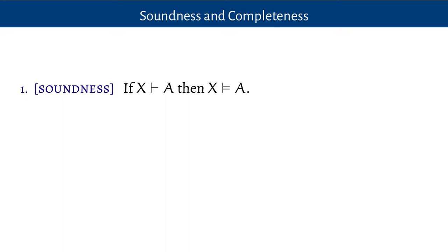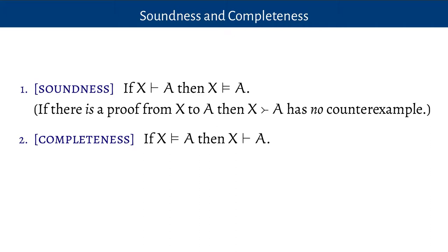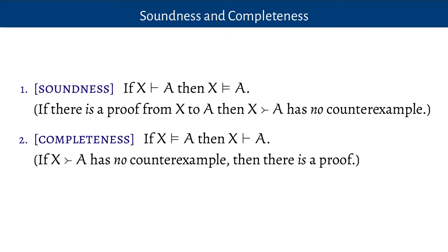We're going to see that there are no gaps and no overlaps. The fact that there is no overlap between proofs and counterexamples is called the soundness theorem. The soundness theorem says: if we have a proof from X to A, then there is no counterexample — the argument from X to A has no counterexample. The converse is the completeness theorem: if we don't have a counterexample to the argument, then there is a proof from the premises to the conclusion. These are two very interesting facts, and we're actually going to prove them.